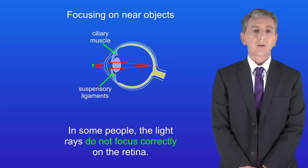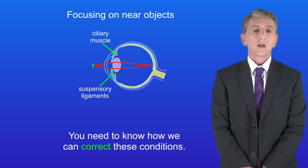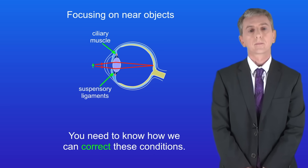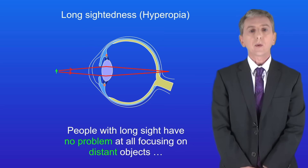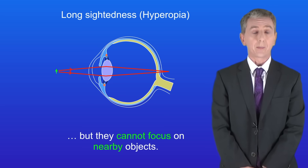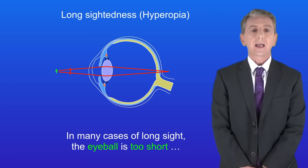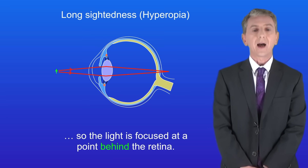In some people the light rays do not focus correctly on the retina, and these people can be short-sighted or long-sighted. Long sight is also called hyperopia. People with long sight have no problem focusing on distant objects but they cannot focus on nearby objects. In many cases of long sight, the eyeball is too short, so the light is focused at a point behind the retina.